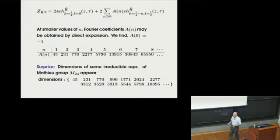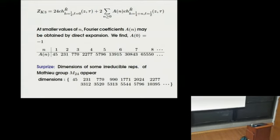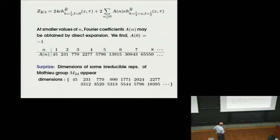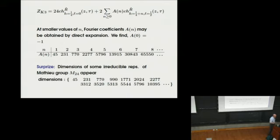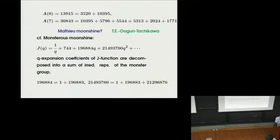It seems likely that this pattern repeats at higher and higher orders. This reminds us of the famous monstrous moonshine phenomenon. If you expand the modular J function in a Q series, the coefficient of q is 196884, which equals 1 plus 196883 — the dimension of the smallest representation of the Monster group. The coefficient of q² similarly decomposes into sums of Monster group representations. The J function is just elliptic function theory, and the Monster group has nothing to do with the J function a priori — completely different objects somehow intersecting in a very mysterious way.